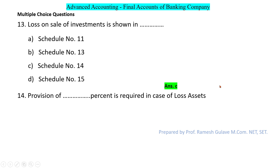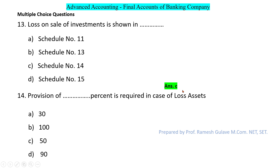The next question asks: provision of what percent is required in case of loss assets? In the case of loss assets, 100% provision is required, so option B is the right answer.